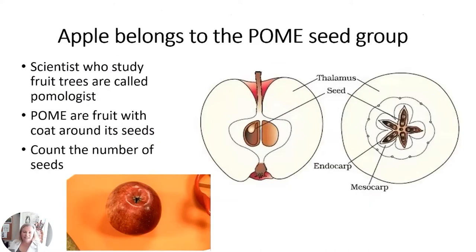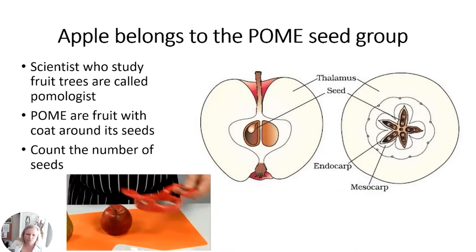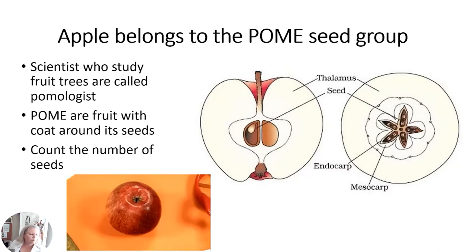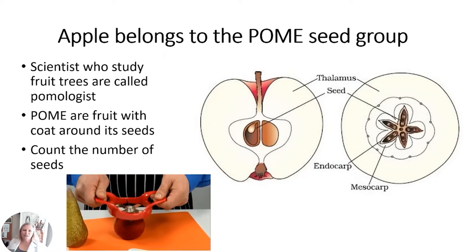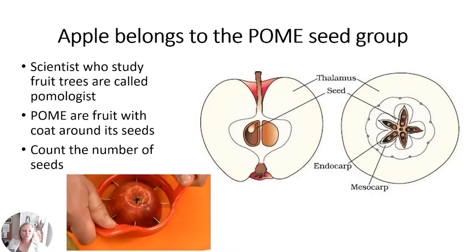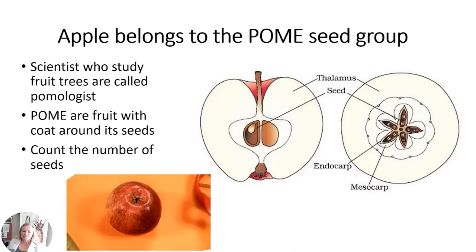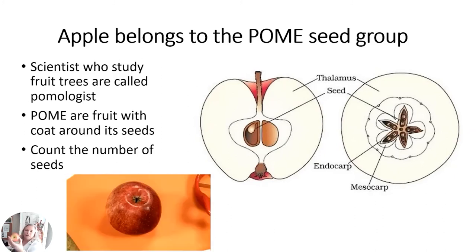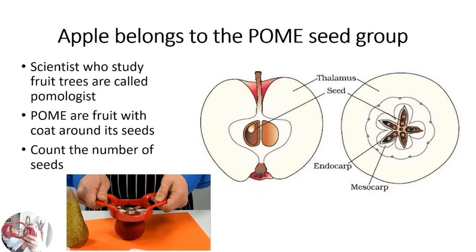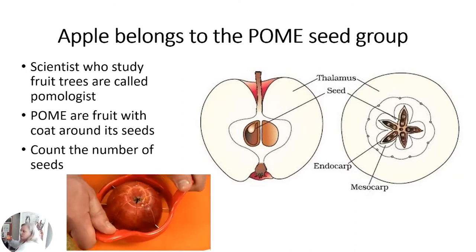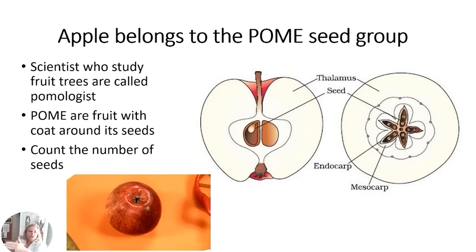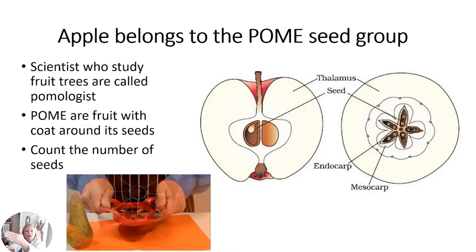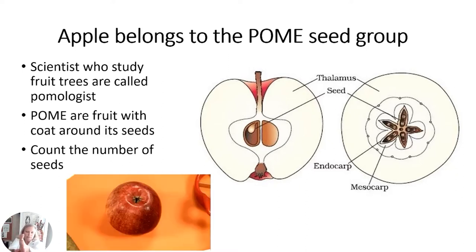Our apple belongs to the pome seed group. Scientists who study fruit trees are called pomologists — remember, a botanist studies plants, but a pomologist studies fruit trees. Pomes are fruits with coats around the seed, and you can count the number of seeds. Using an apple cutter makes it easy to cut out the core. You can cut an apple sideways for a front view, or cut it the other way to get the star shape.